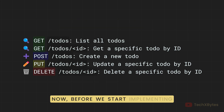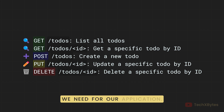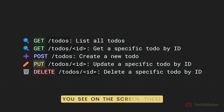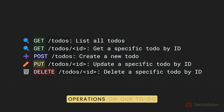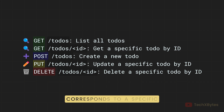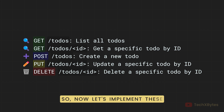Before we start implementing the routes, let's list the routes we need for our application. We will be creating the routes you see on the screen. These routes will allow us to perform CRUD — create, read, update, delete — operations on our to-do items. Each route corresponds to a specific HTTP method and URL pattern. Now let's implement these routes in our Flask application.